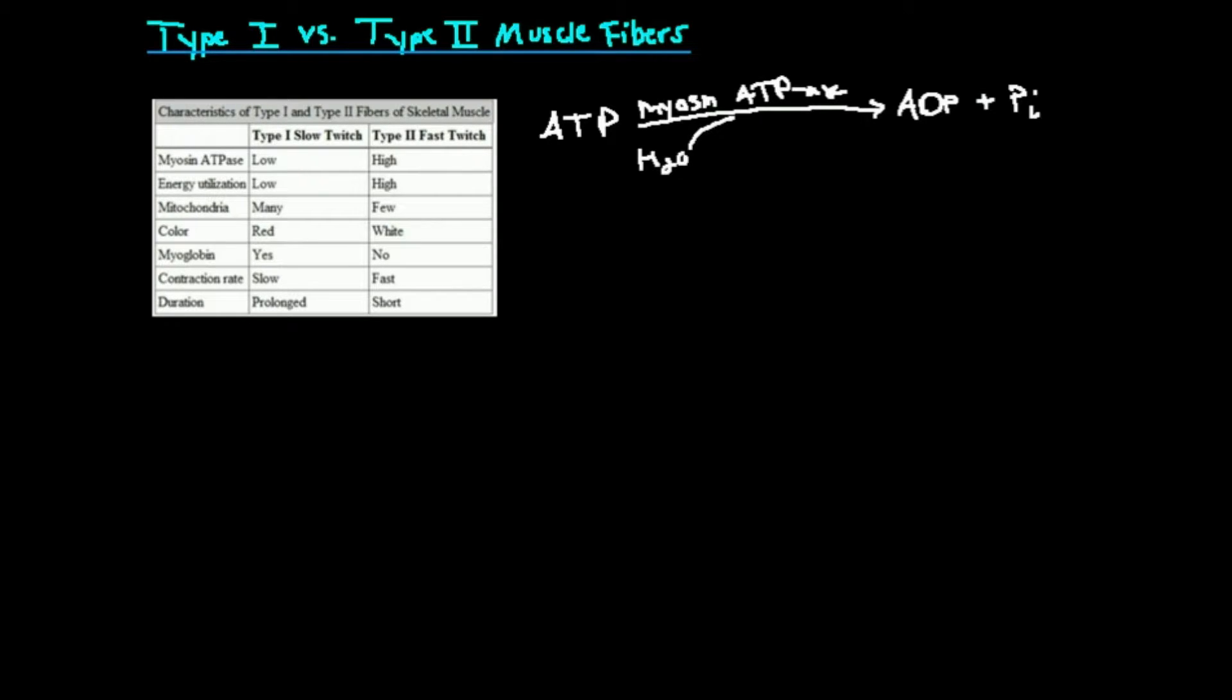It turns out that this enzyme, myosin ATPase, has a much higher concentration in type 2 muscle fibers. In other words, this enzyme, there's a lot more of it in type 2. You see it's high in type 2. It's lower in type 1.